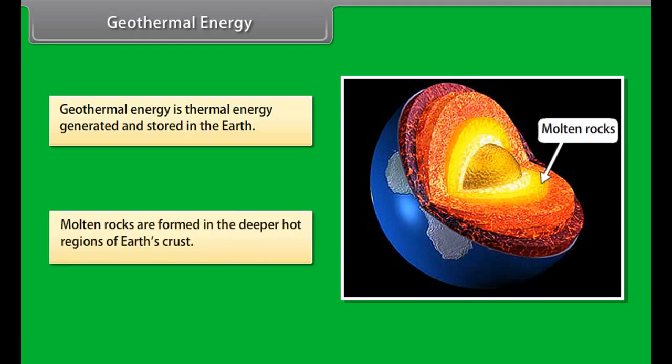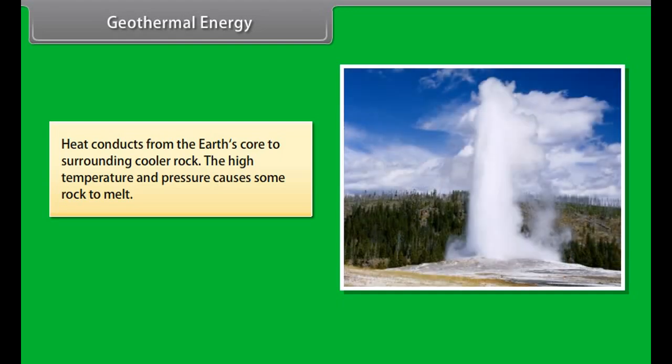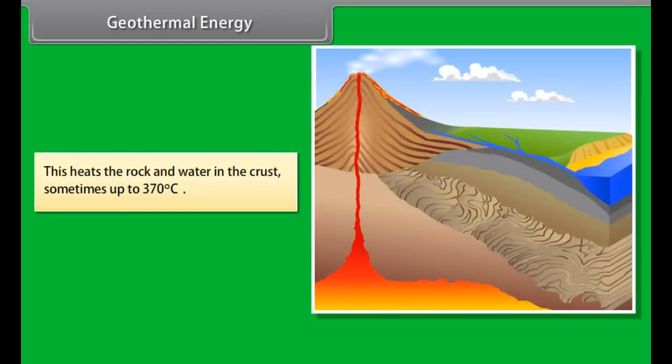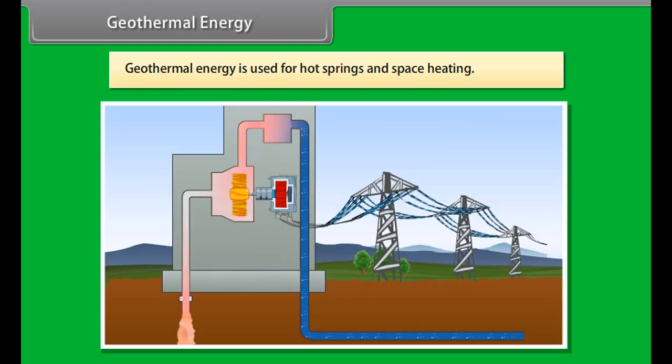Ocean thermal energy uses the temperature difference between cooler deep surface and warmer shallow surface ocean waters to run a heat engine and produce useful form of energy, mainly electricity. The heat engine gives greater efficiency and power when it is run with a large temperature difference.